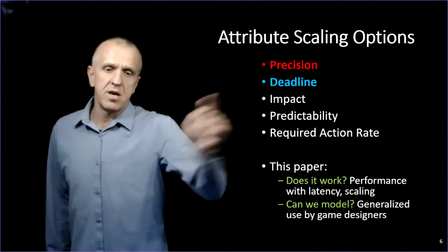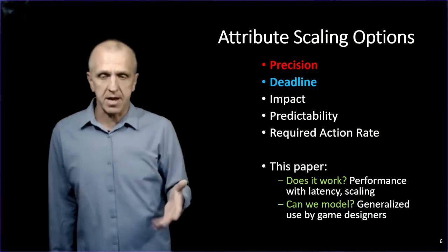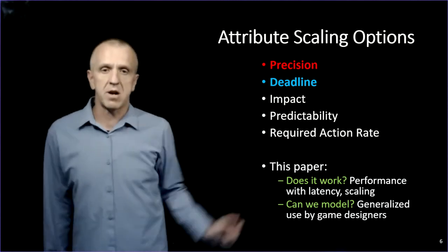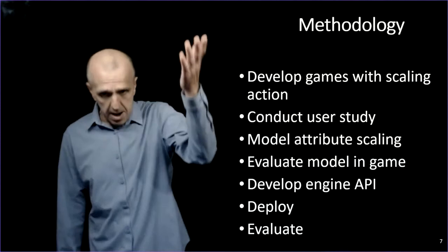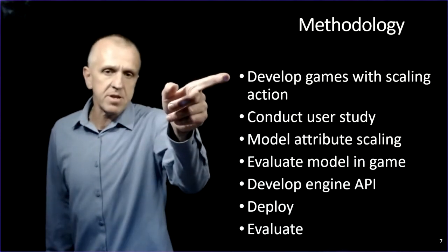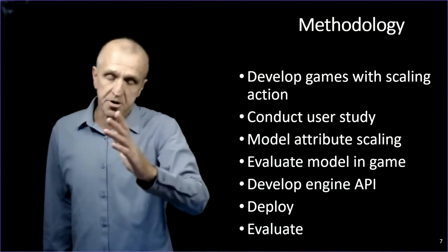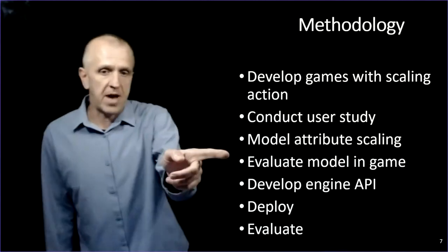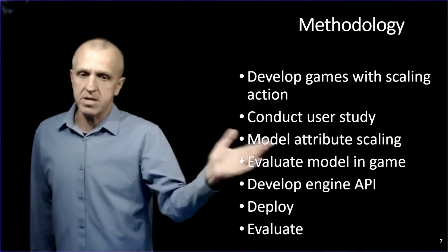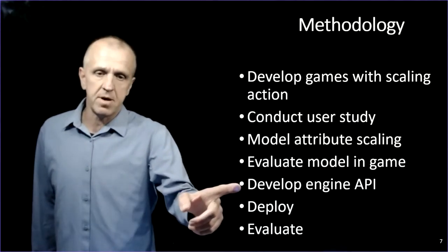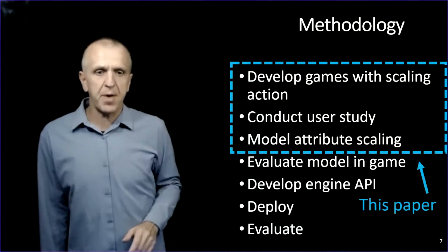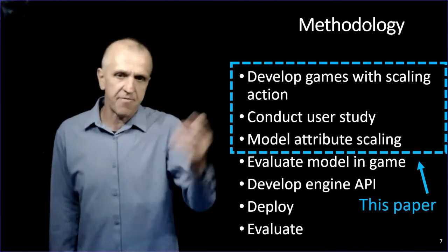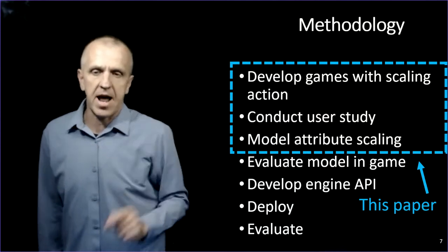So what we're doing in this paper is, first of all, can I go ahead and take an action and see if I can scale it? Does it work? Can I assess player performance with latency and with different amounts of scale? If so, can I model it? Can I generalize the use of that attribute scaling method so that game designers can do it? So how are we going to do that? This is our methodology. We're going to develop some games that have a scaling action in place. We're going to conduct a user study to see if we can understand if this attribute scaling is working. And if so, we can hopefully generalize it. The generalization will be in the form of a model. We're going to evaluate in a game, take that model, stick it in the game, see if it makes the game more fun with latency.